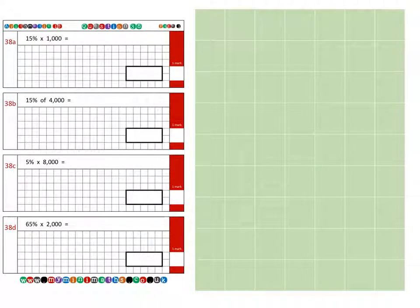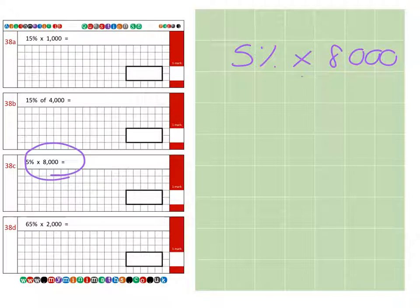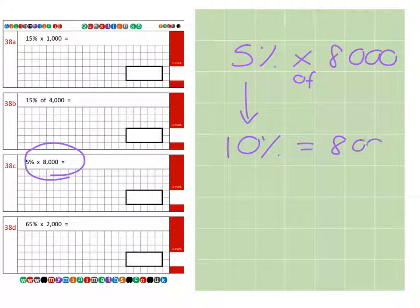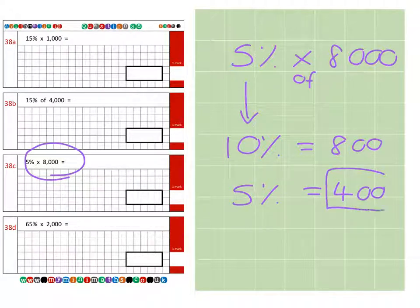Next is question 38c, which is calculating 5% of 8,000. The first thing we're going to do is work out 10% as our normal starting point. That's 8,000 divided by 10, which gives us 800. Then we're going to halve this 10% to give us 5%. So the final answer is 400.